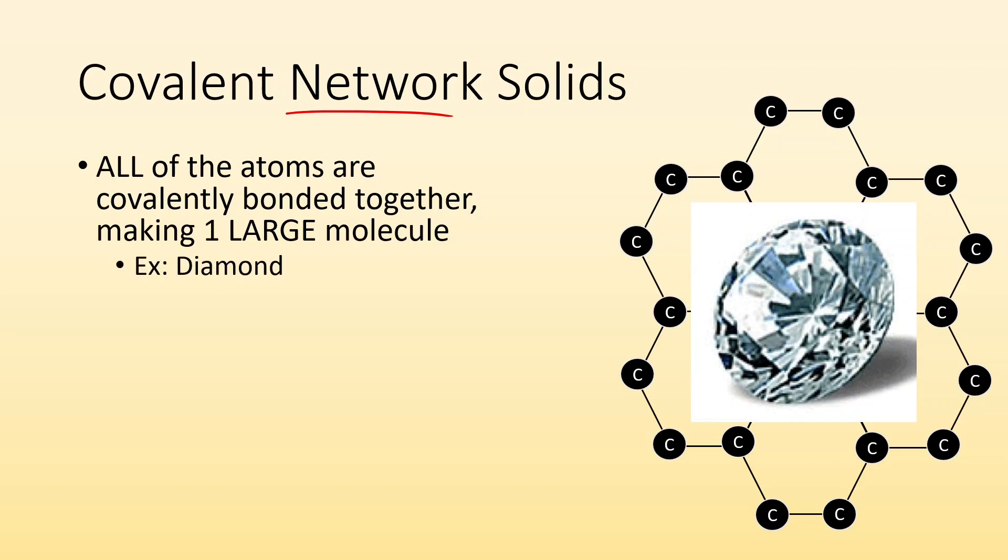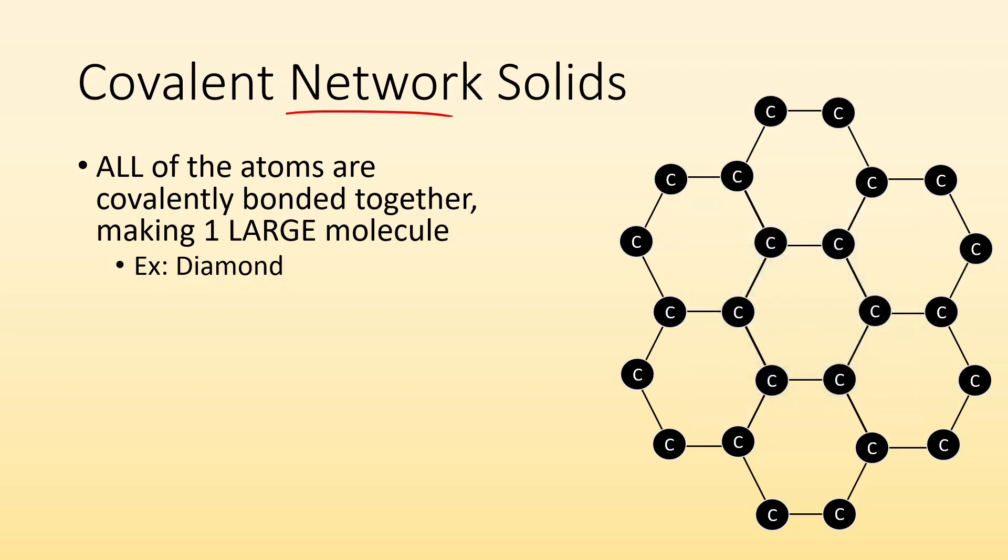An example would be diamond. So diamond's made of carbon, same as graphite, but the difference is in diamond, all of those carbon atoms are bonded together, giving us a network solid.